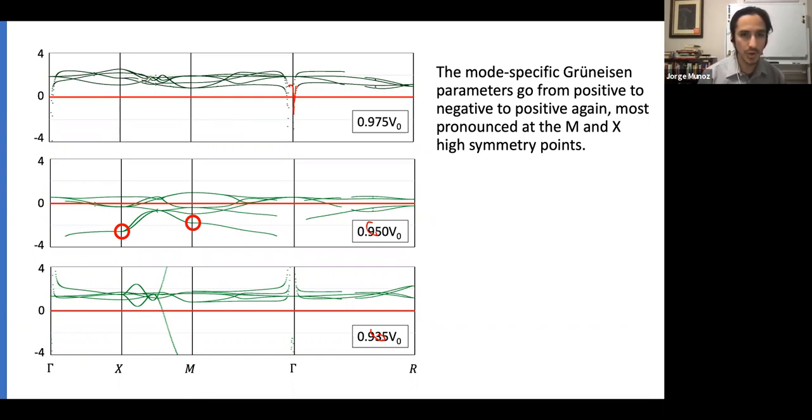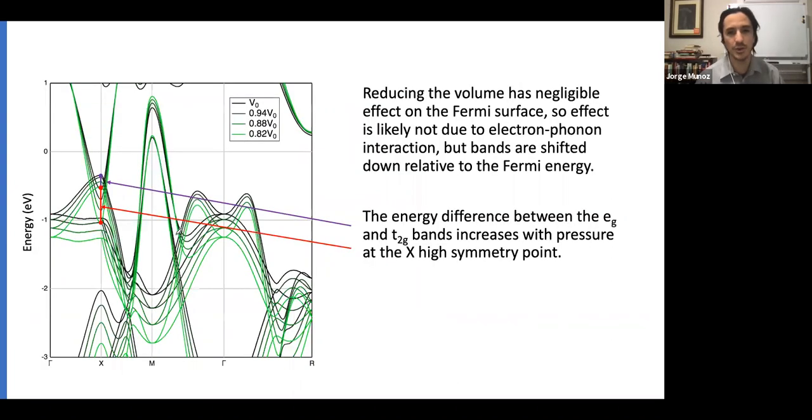The main thing to notice is that at 0.97, most of the modes are around 0.93 for their Grüneisen parameter, which is pretty typical for a material. But at this compression at 0.95, they actually become negative. We have a large number of phonons that are negative, particularly the ones at X and M that we pointed out before. But then as you keep compressing, they go back to being positive. This is kind of interesting, unique behavior.